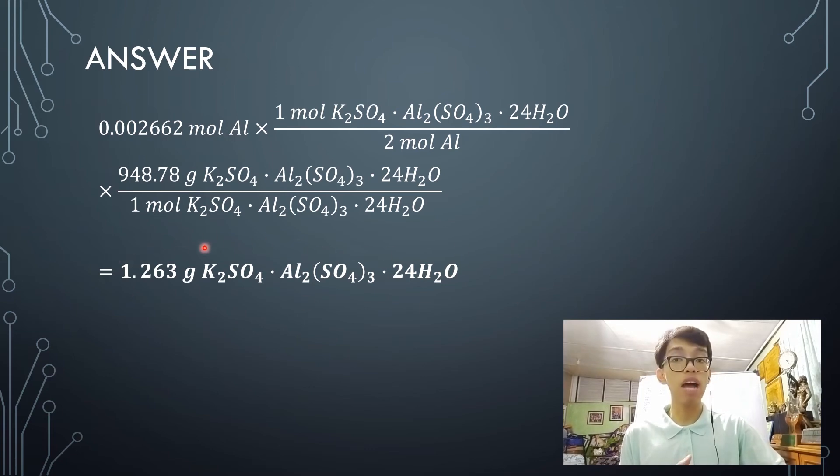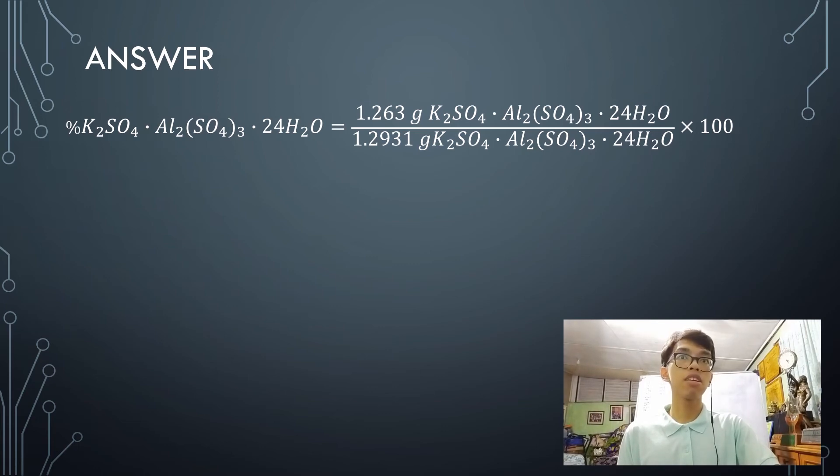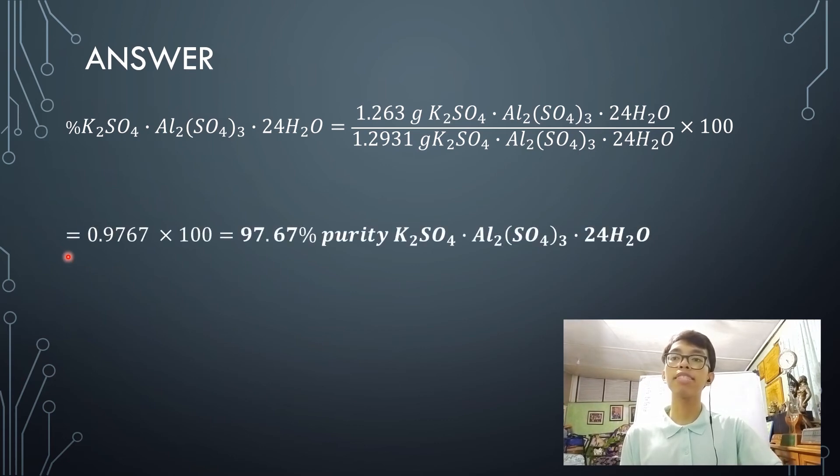Now, this is the amount of alum that has been yielded after the gravimetric analysis. So this is the amount of alum in the end product. Now, to determine the purity of alum in the problem, we're going to divide 1.263 grams of alum over the initial amount of 1.2931 grams and multiply that by 100. So 1.263 divided by 1.2931 gives us 0.9767. Multiplying by 100 gives us 97.67% purity of alum.